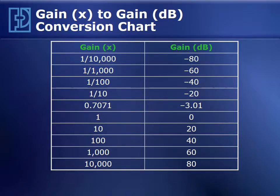So just to do some review here, if we have a gain of 1 over 10,000 or an attenuation of 10,000, that gain in decibels is minus 80 dB. A gain of 1 is 0 dB, a gain of 10 is 20 dB, and you can see as we increase gain by a factor of 10, we increase decibels by 20, or we add 20 to the decibel.